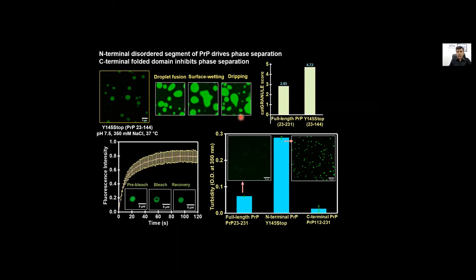Another question we asked: if we have the full length prion protein, bioinformatic analysis using the Catgrannule program showed that the full length prion protein has a much lower phase separation propensity as opposed to the Y145 stop fragment. That's exactly what we see by turbidity measurements. The full length prion protein does phase separate as you can see in the confocal image as well, but Y145 stop has a much higher propensity to form liquid droplets whereas just the C-terminal part from 112 to 231 did not show any turbidity or we were not able to see any droplets in confocal micrograms.